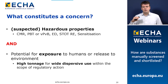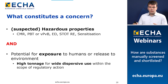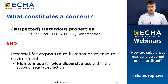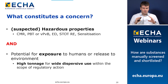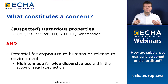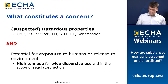What constitutes a concern for us? A concern is always composed of two elements: we need a hazard, or a suspicion of a hazard, or possibly even a lack of information that would help us determine the hazard is not present. We focus on CMRs — carcinogens, mutagens, reproductive toxicants — PBTs, vPvBs, repeat-dose toxicants, and sensitizers. But having a hazard or suspicion of a hazard is not enough; we also need a potential for exposure or a potential for release to the environment.